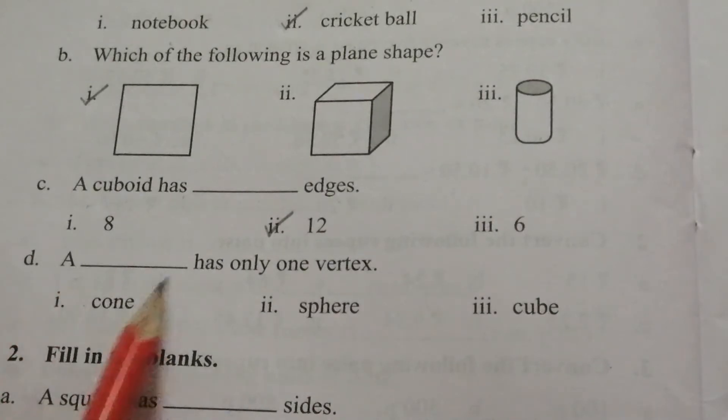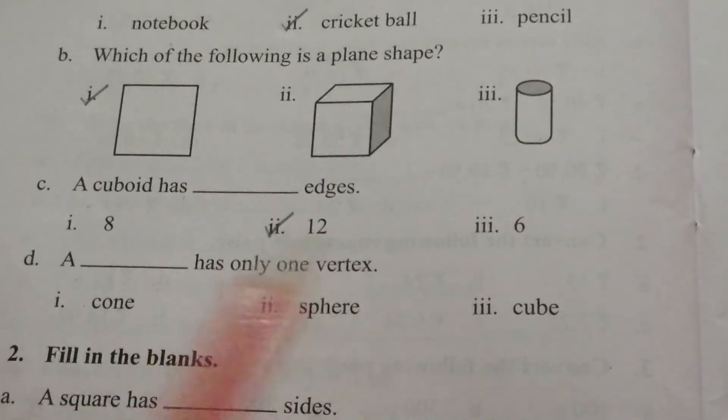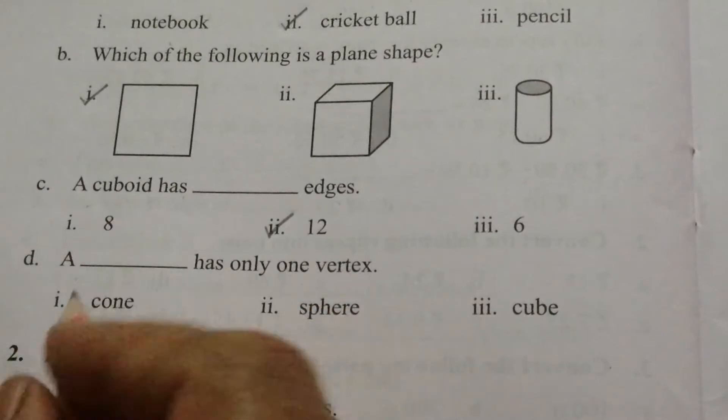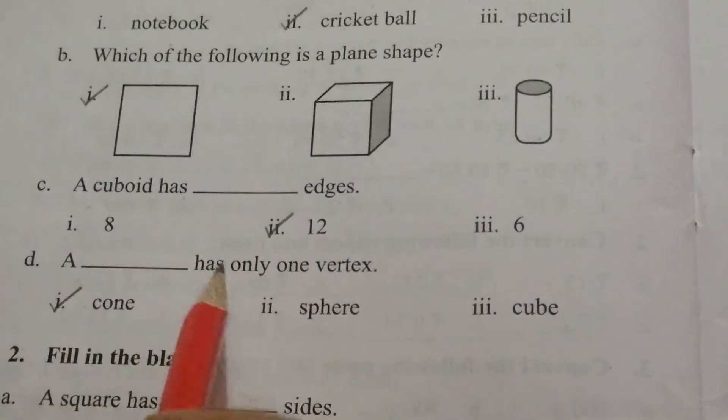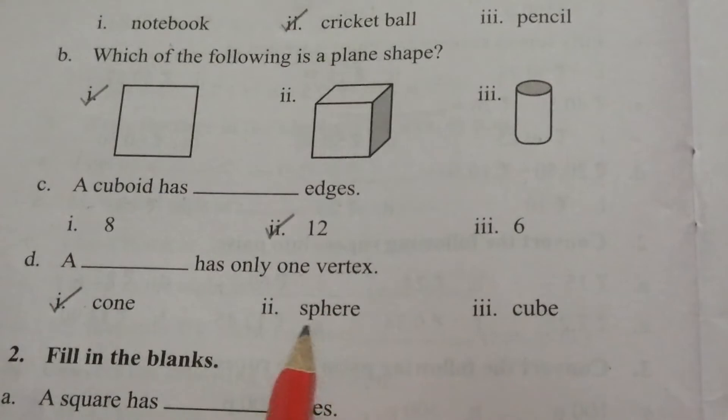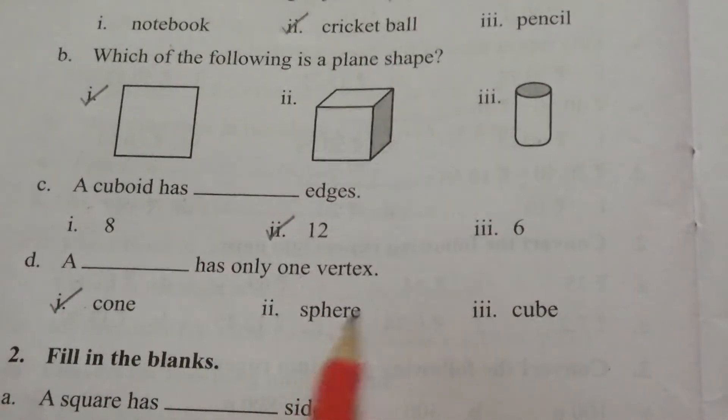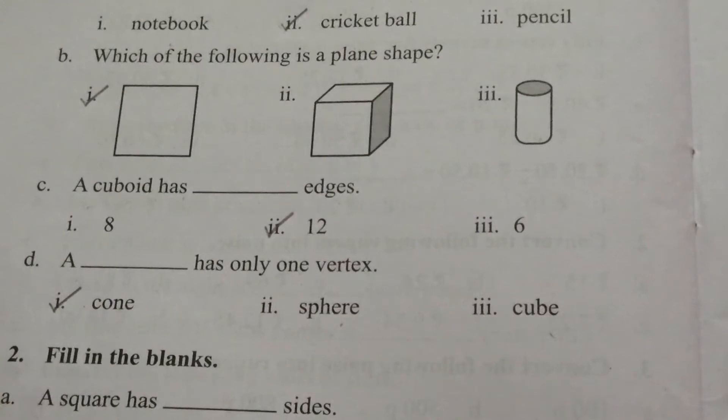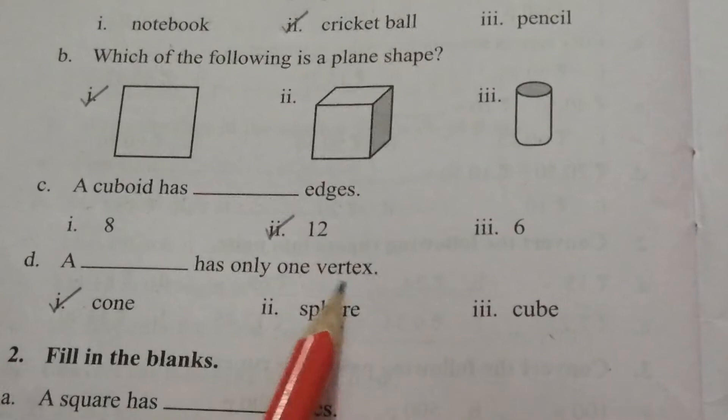D. A blank has only one vertex. The options are cone, sphere, cube. The answer is cone. Cone has only one vertex. Sphere has no vertex, and cube has 8 vertices. Vertices is plural of vertex.